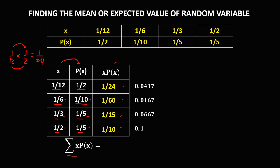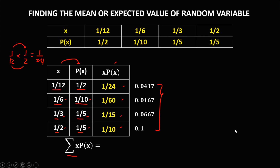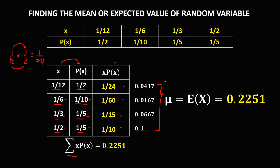To solve now for the summation of x times p(x), we just need to add all these numbers. So we have 0.0417 plus 0.0167 plus 0.0667 plus 0.1 equals 0.2251. So therefore, the mean or the expected value is 0.2251.